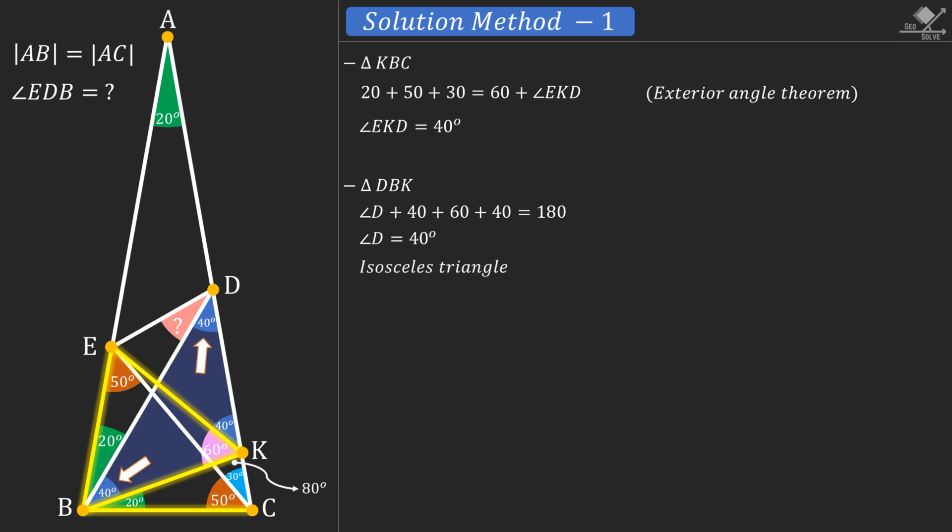Now we see that this triangle has equal base angles of 40 degrees. So it is an isosceles triangle. So the corresponding sides must be equal in length.